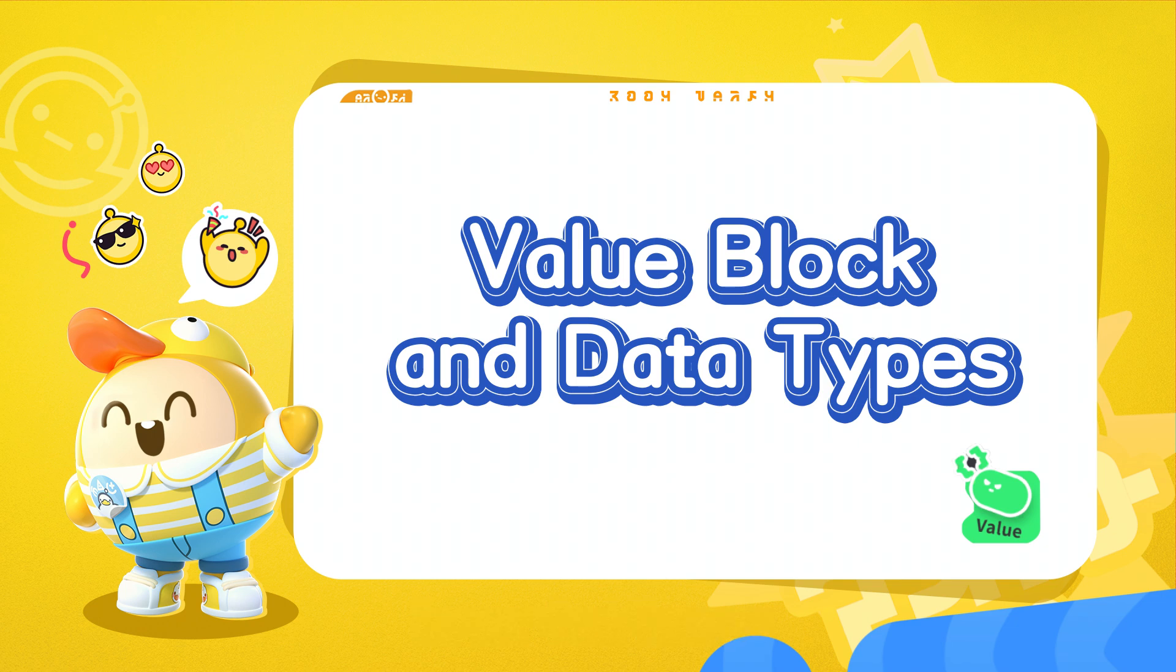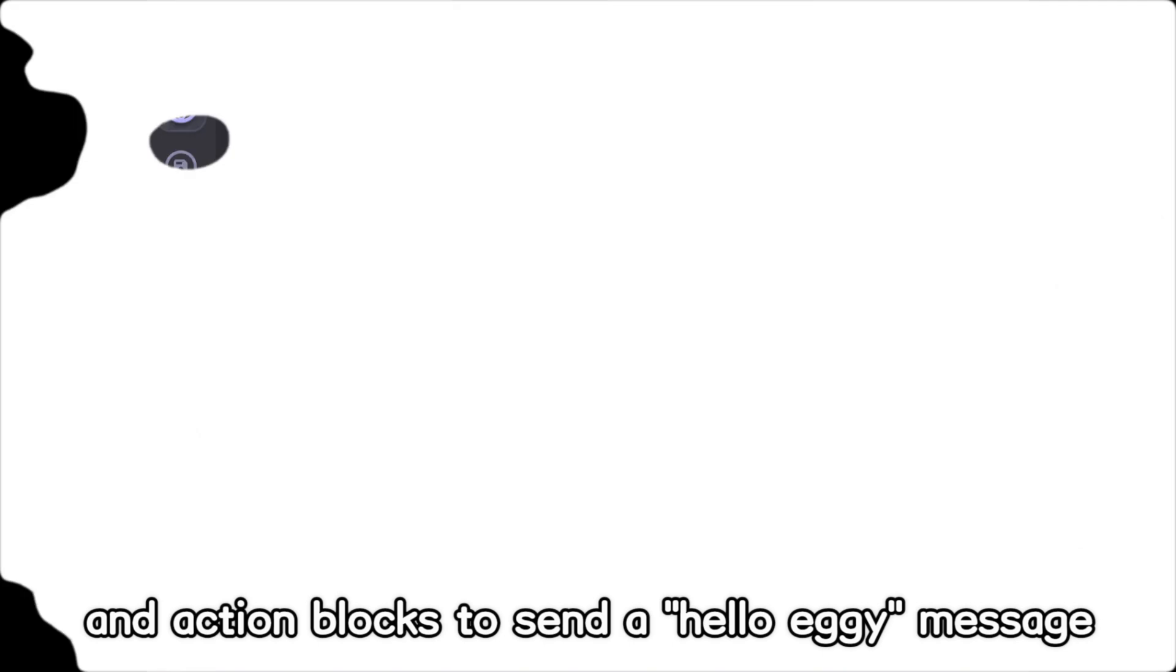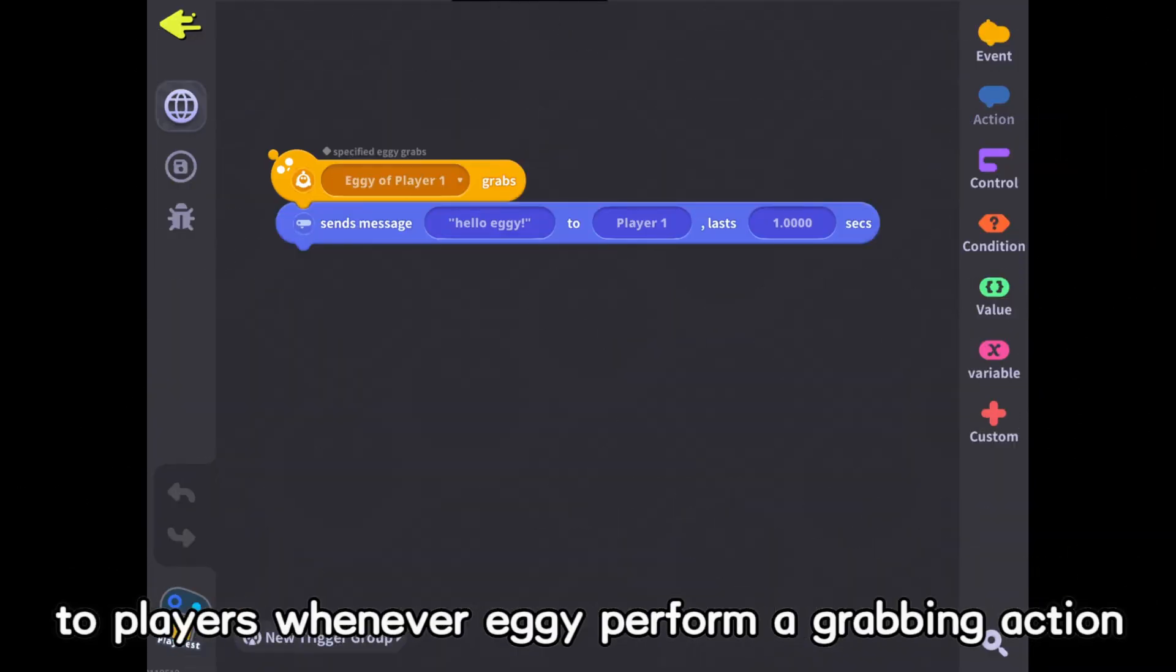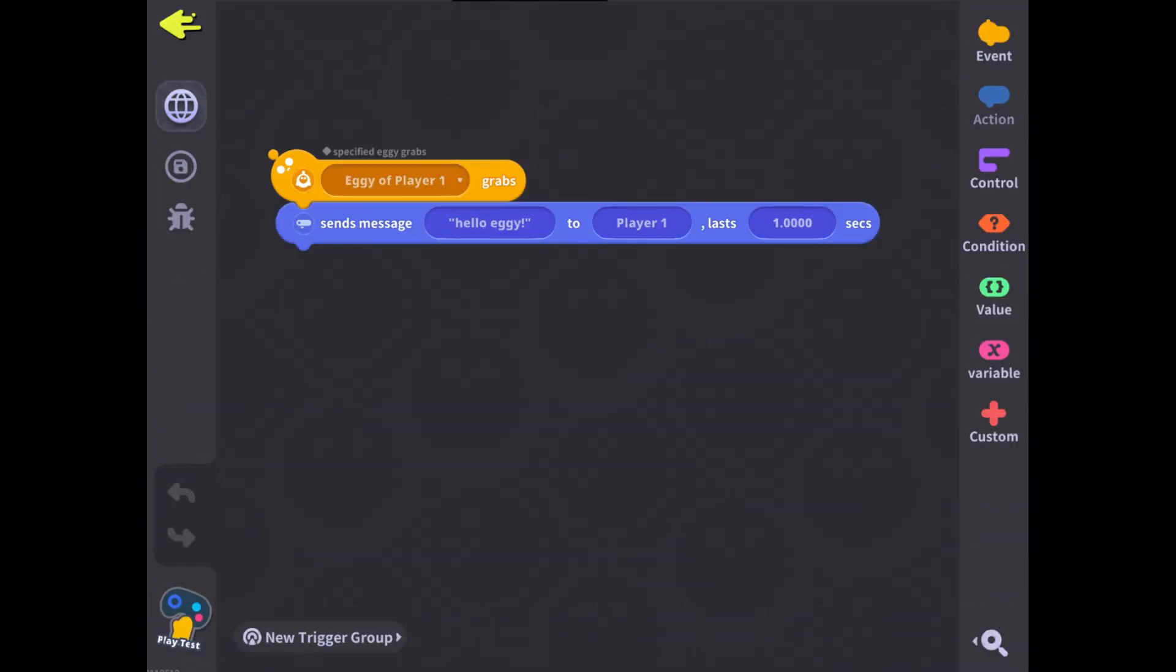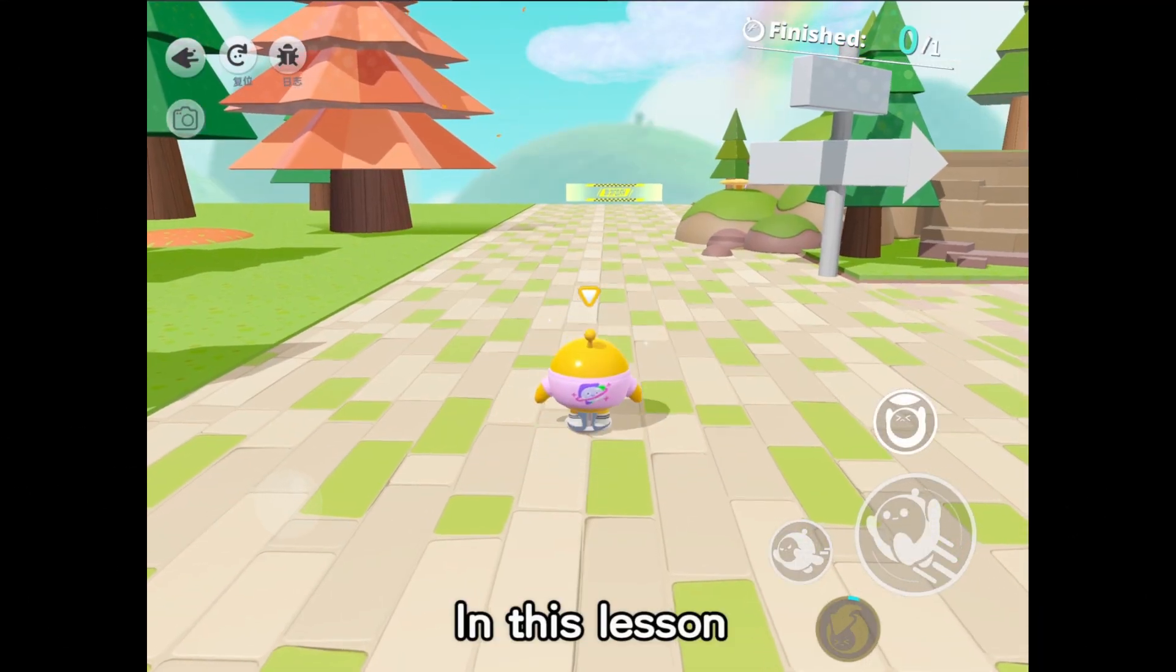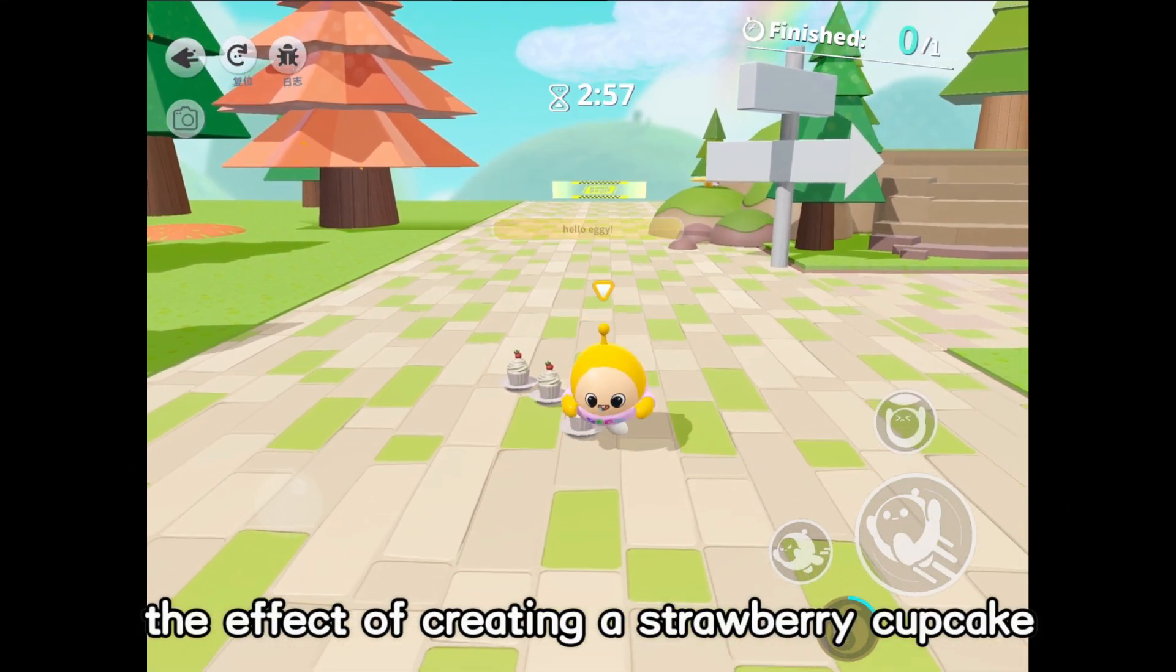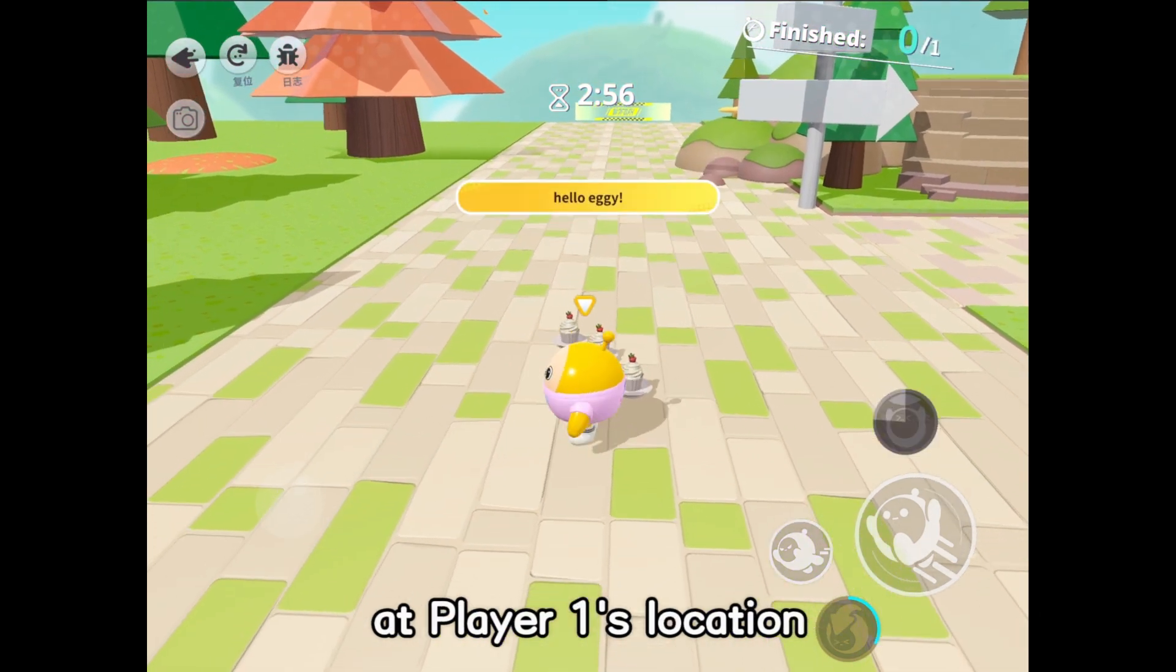In our last lesson, we learned how to use event blocks and action blocks to send a Hello Eggie message to players whenever Eggie performs a grabbing action. In this lesson, we will build on sending messages by adding the effect of creating a strawberry cupcake at Player 1's location.